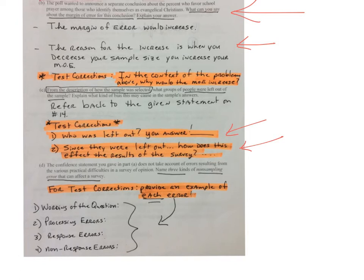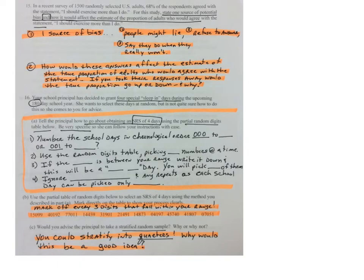And finally, the fourth one: give me a type of non-response error that could be involved in this scenario. On number fifteen, the statement says state one source of potential bias. Well, one source of bias could be people might lie, people refuse to answer, or they say that they work out when they don't.